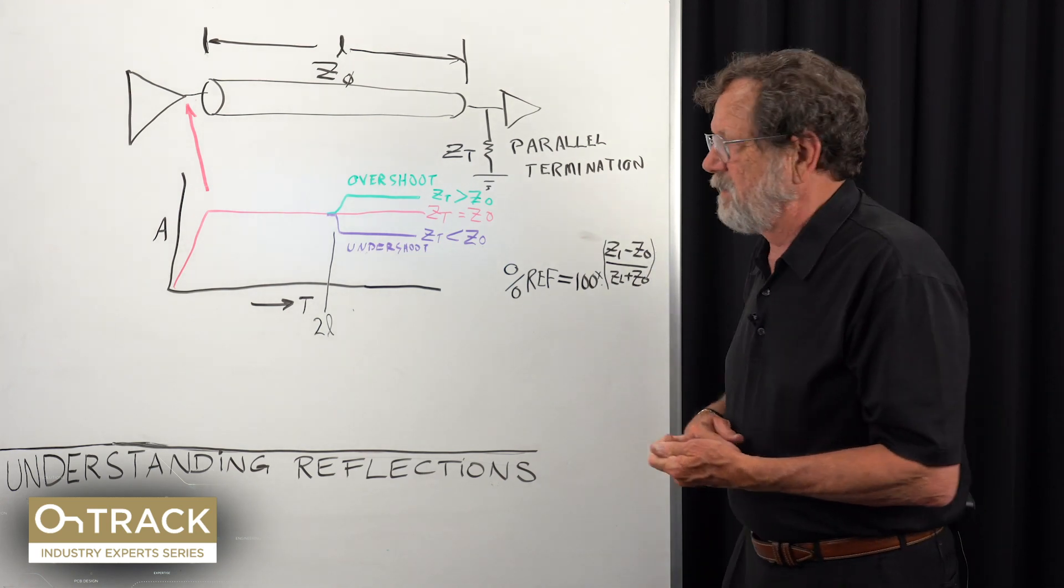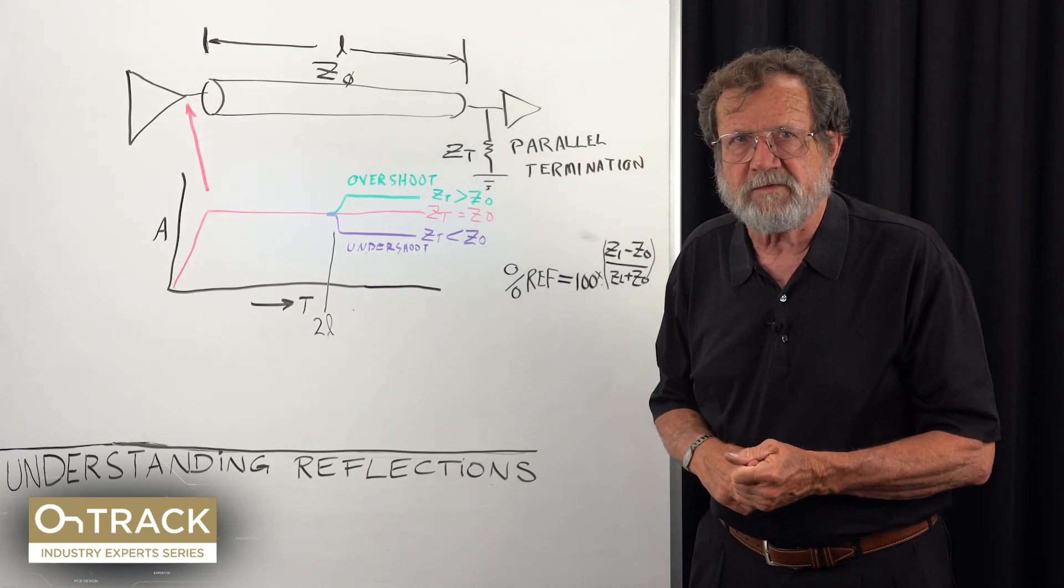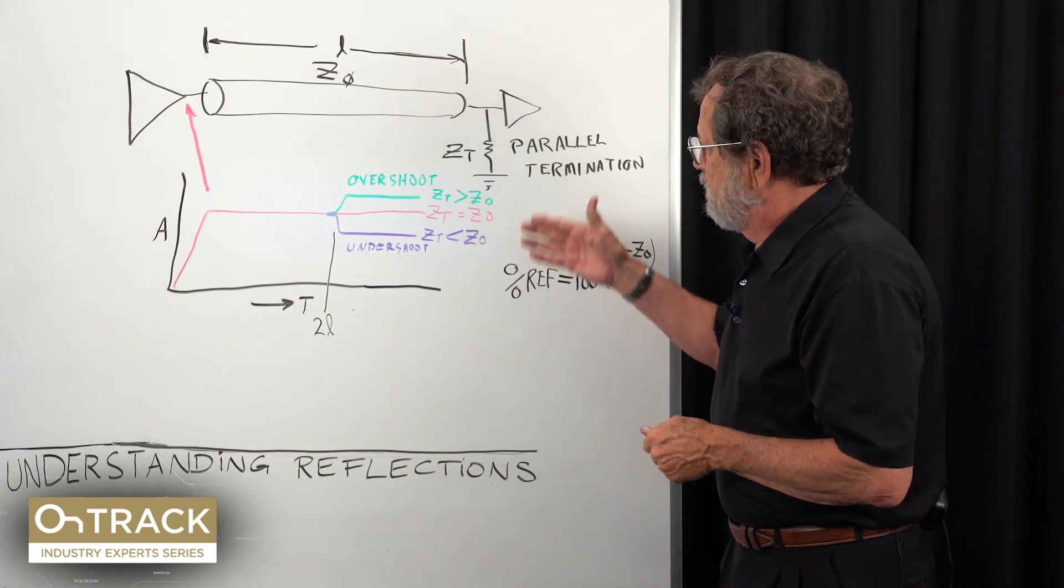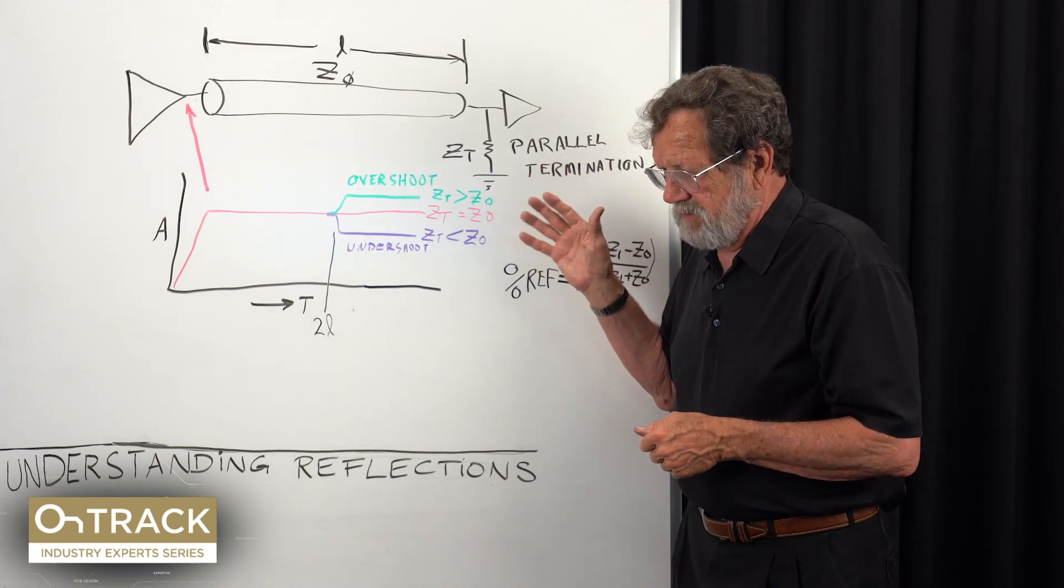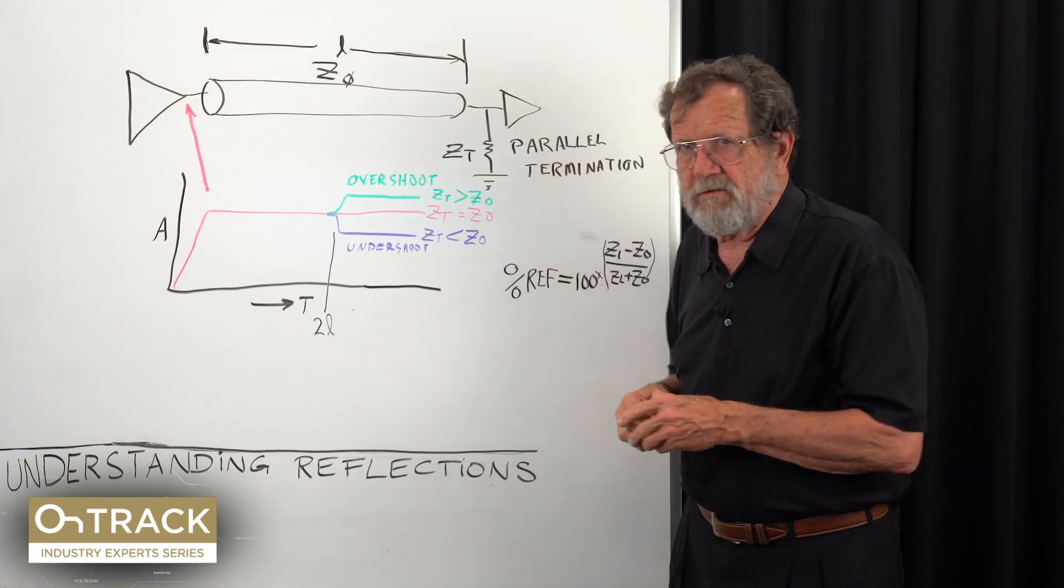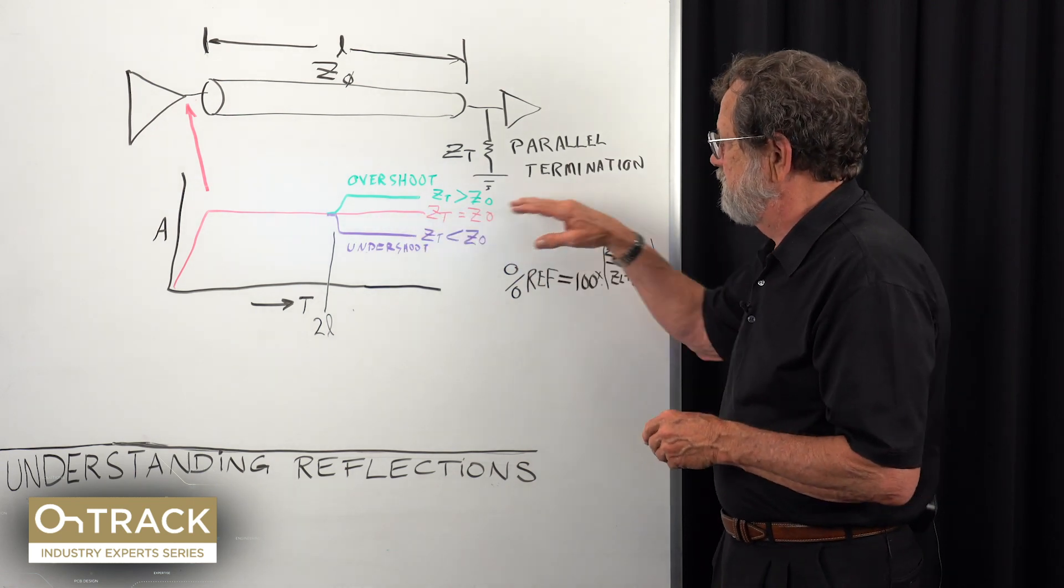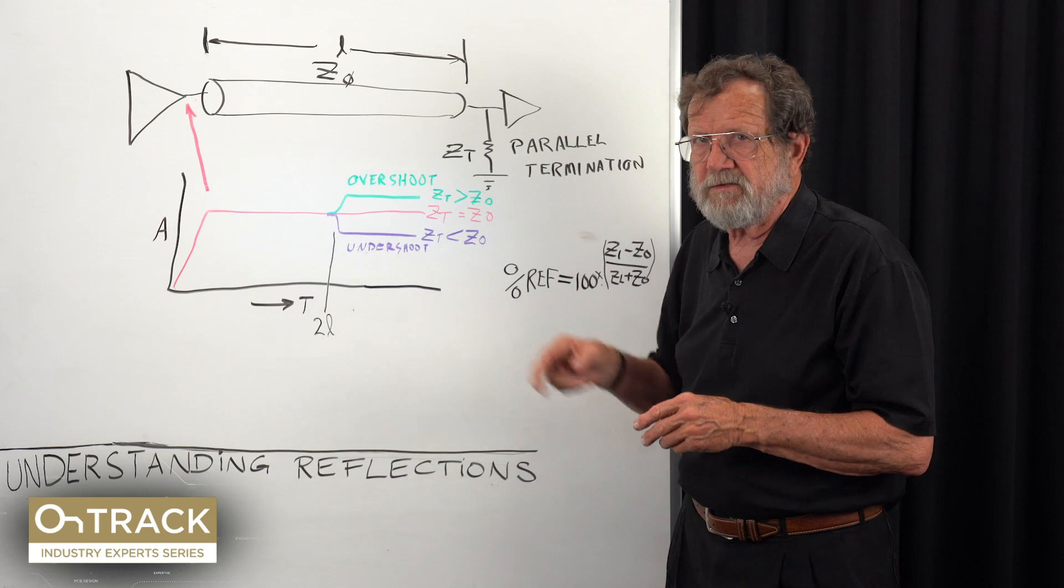In the digital world, we have hundreds of thousands of paths, so we can't hand-tune every one of those. The good news is the logic families that you and I work with now have a tolerance for these reflections. The trick is to make sure you match impedances well enough so that when you do get undershoot, it is within limits.